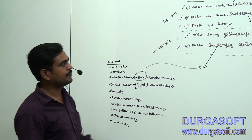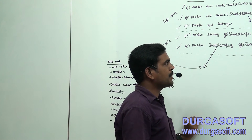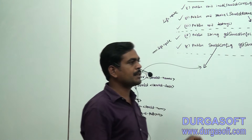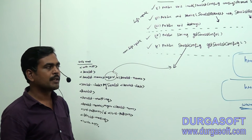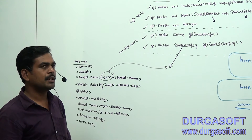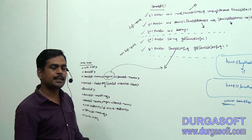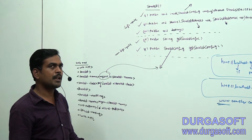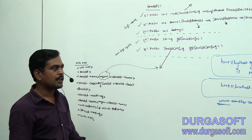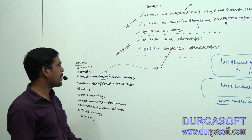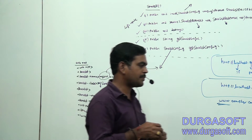Then next, getServletInfo. The purpose of getServletInfo is: if we want to find the servlet version, who is the author of the servlet, if we want to find such type of information, we have to go for the getServletInfo method. Now first of all we will see whether we are really getting the servlet name or not.